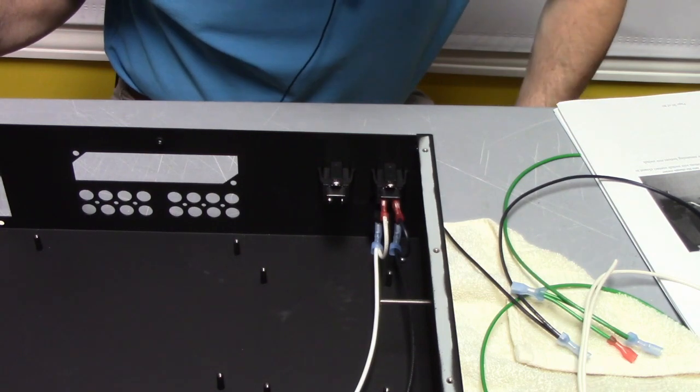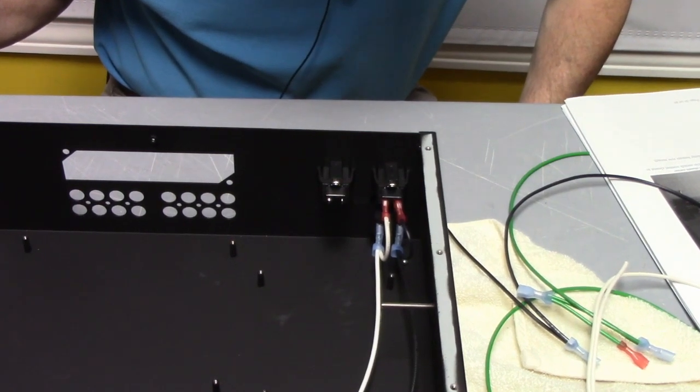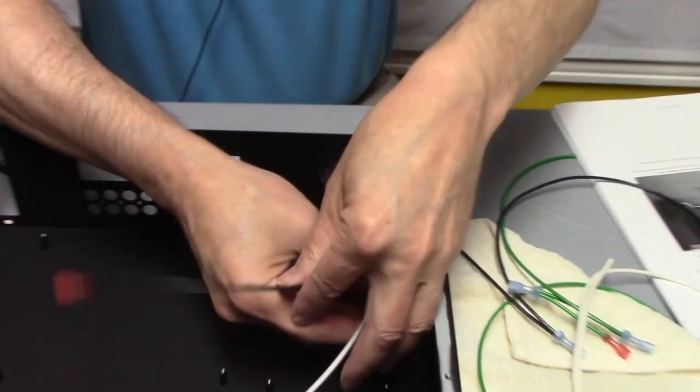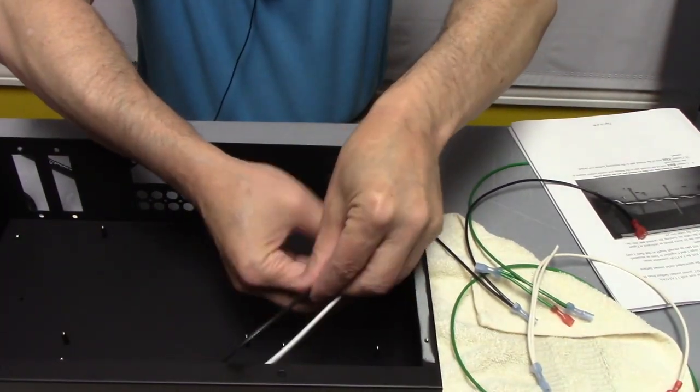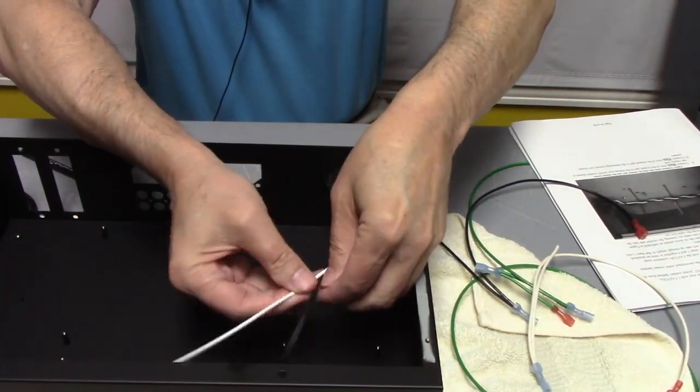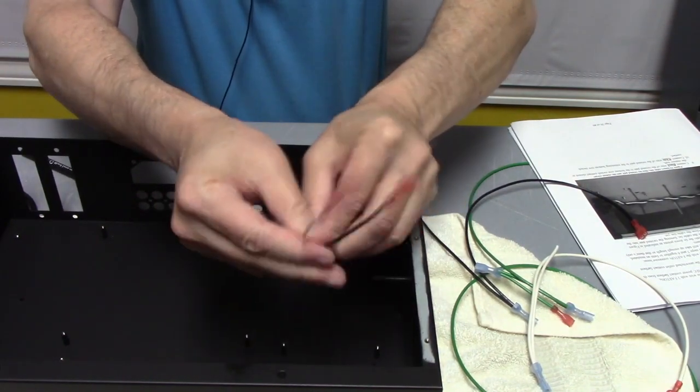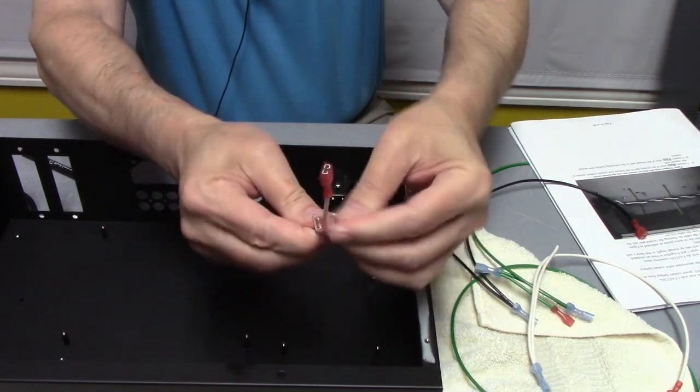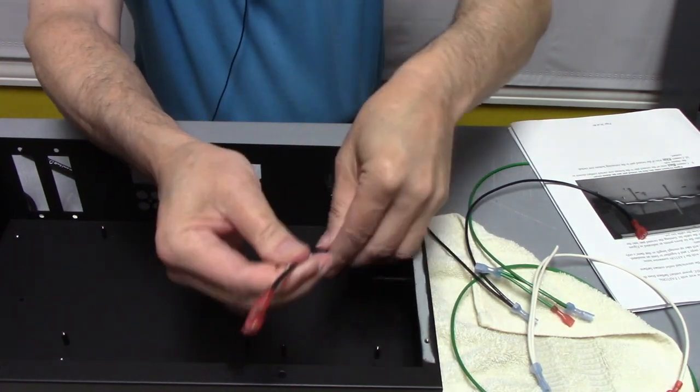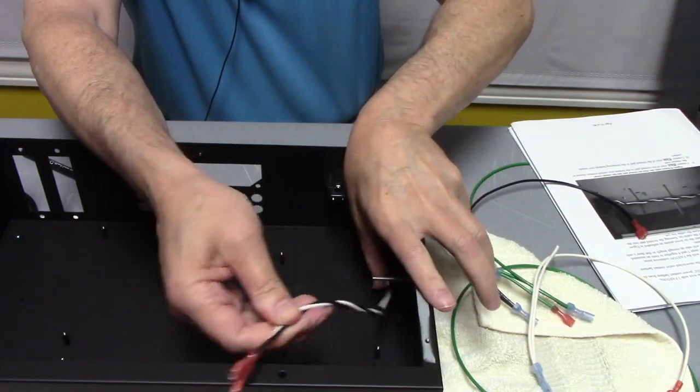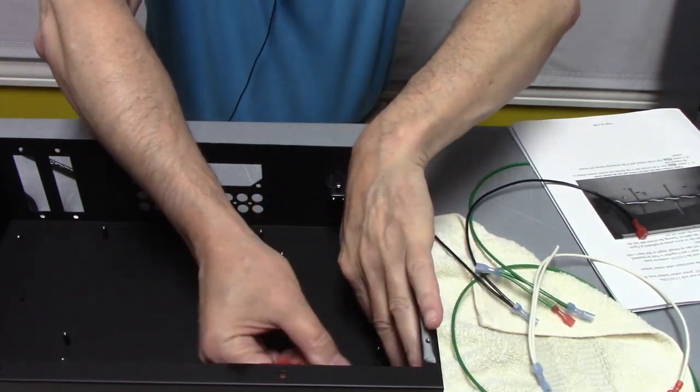And then it says twist the white and black guys together to form an insulated twisted pair. All right. We can do that. A couple more twists. Make it look good. And the purpose of this twisting is it keeps AC power voltages from radiating hum fields in the box. That's the benefit of the twisting.